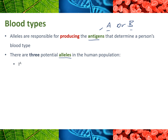One of the alleles is called I superscript A — the I stands for immunoglobulin, though you don't need to know that. So I^A is one of the alleles. You can have I^B, that's the allele that will code for that B antigen. Or you can have lowercase i. Hopefully you're already thinking about what that will mean, the fact that it is lowercase. So we have three potential alleles.